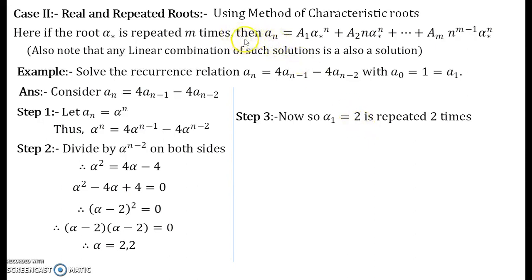Now go analogous with this statement therefore the solution will be general solution will be a_n equal to A₁ α₁ instead of star you will have α₁ over here, to the power n, A₂ n times α₁ to the power n. So you just hold till here. Now observe here very carefully.